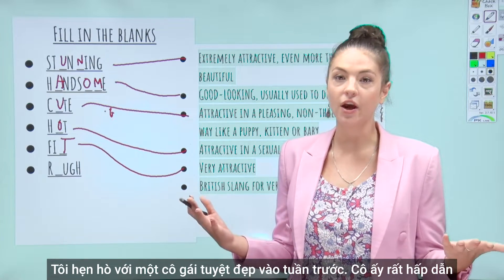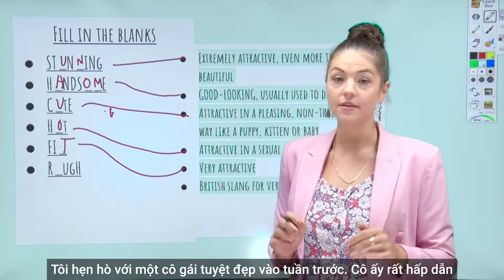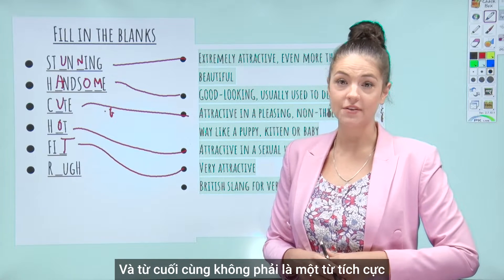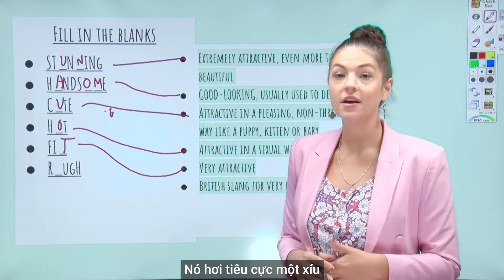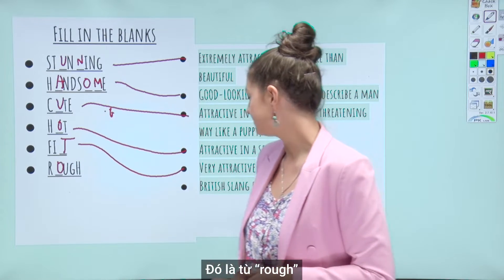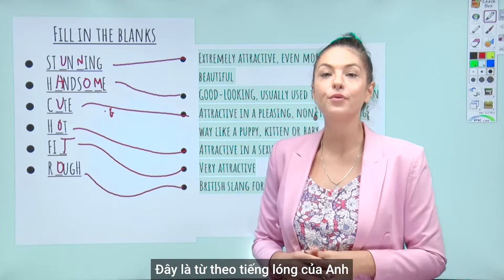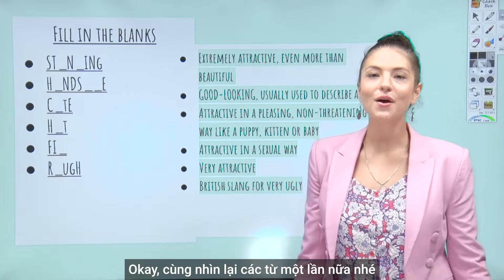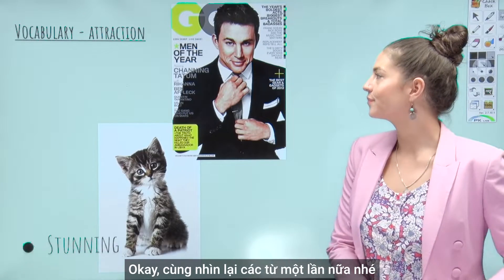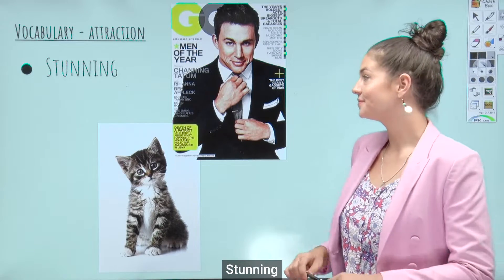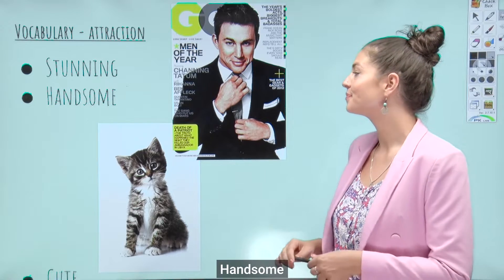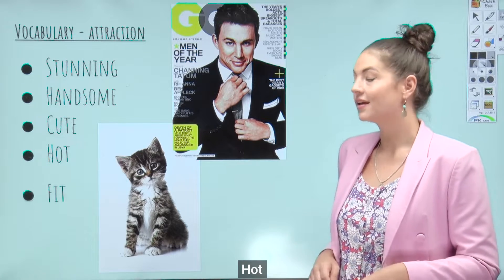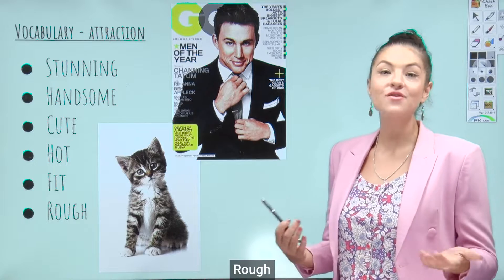I went on a date with a stunning girl last week. And the last word is not a positive adjective — it's a little bit negative. This is ROUGH, a British slang word we use for someone looking very ugly. Okay, let's take a look at those words again: stunning, handsome, cute, hot, fit, and rough.